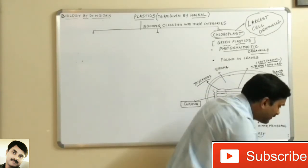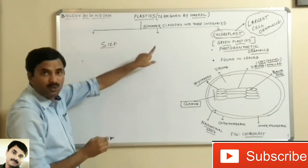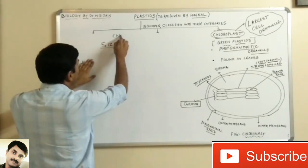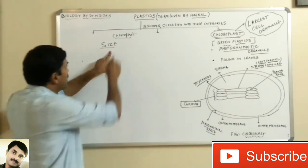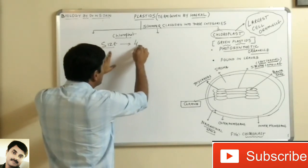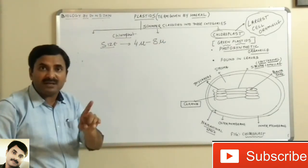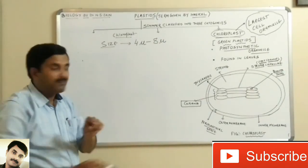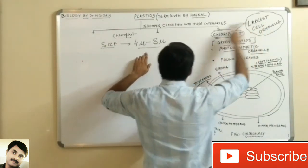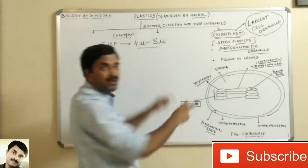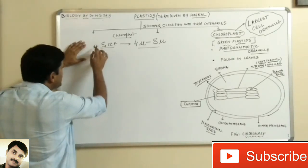When studying chloroplasts, you must know about their size, shape, number, and structure. Regarding size, chloroplasts are four microns to eight microns. They are bigger than mitochondria, which is why they are called the largest cell organelle — their size of four to eight microns is more than that of mitochondria.